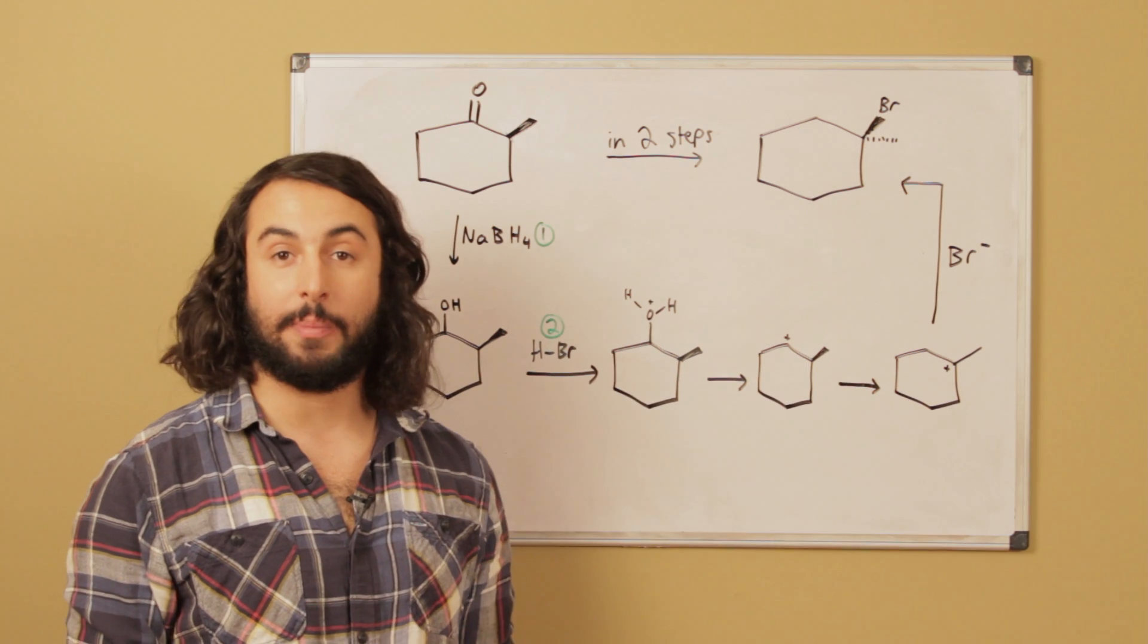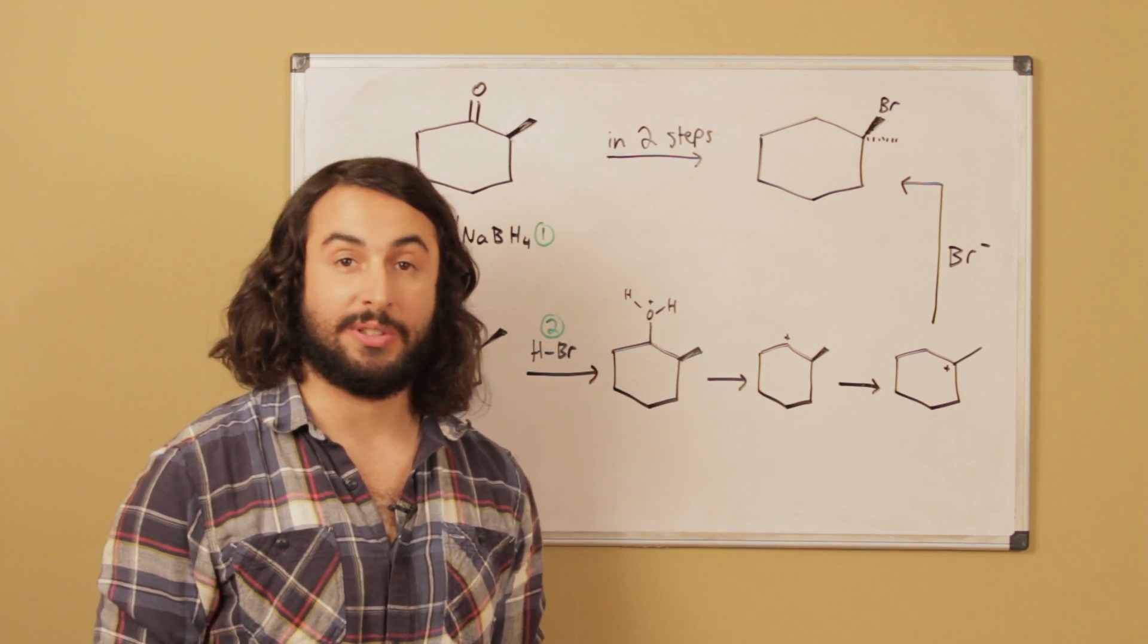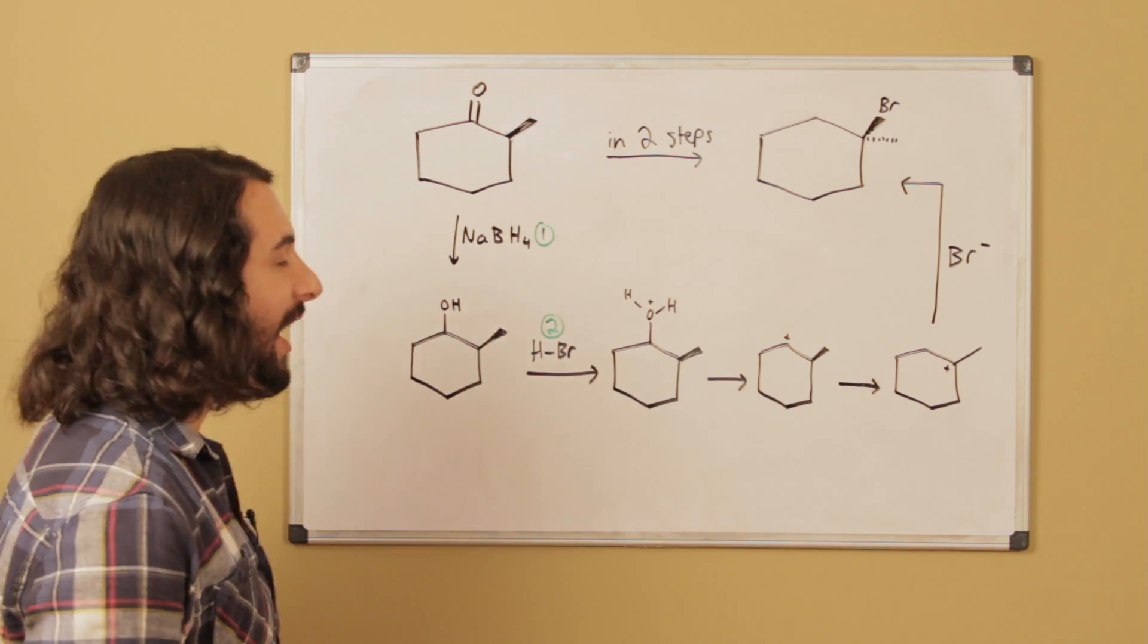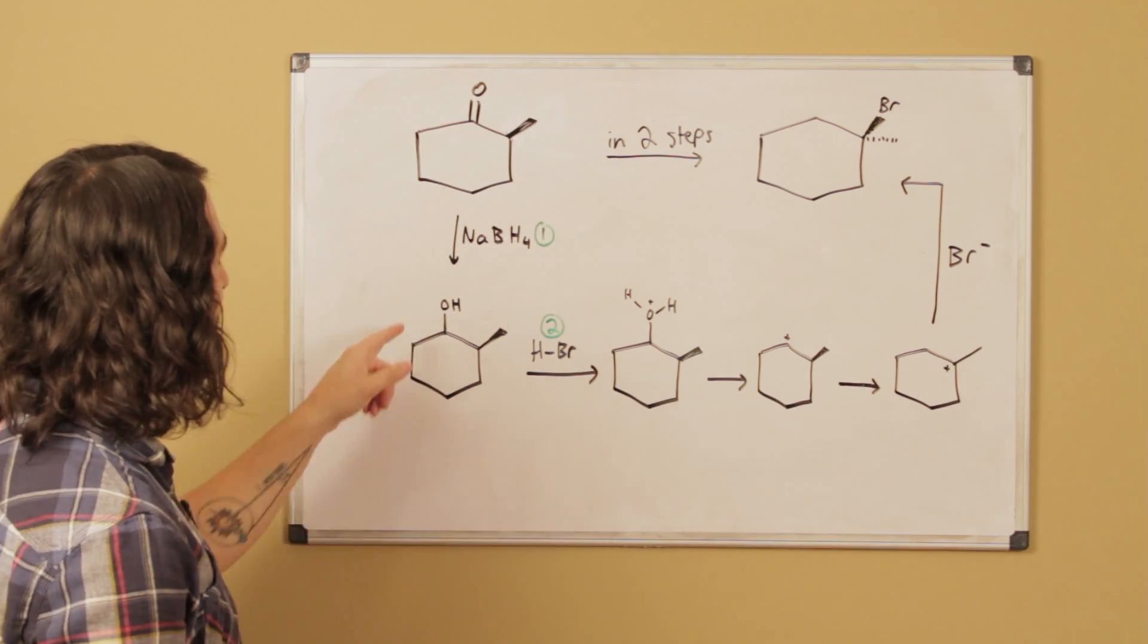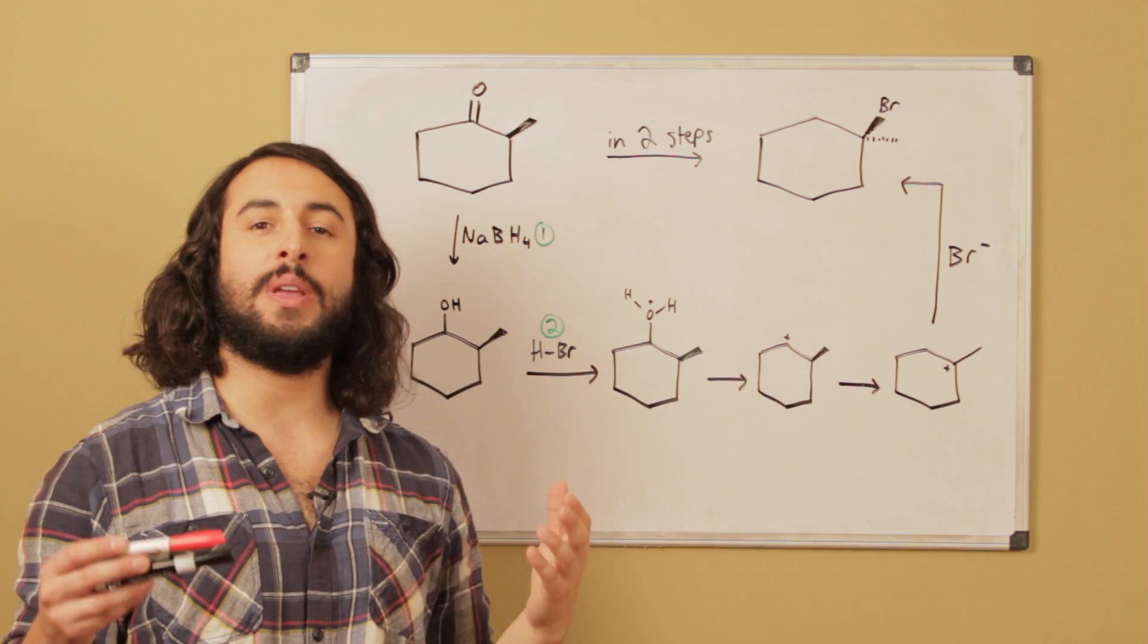Let's take sodium borohydride, just a nice soft reducing agent, and as step one, let's reduce that carbonyl. We're gonna get an alcohol. Now that we have an alcohol, we have some different possibilities to think about.